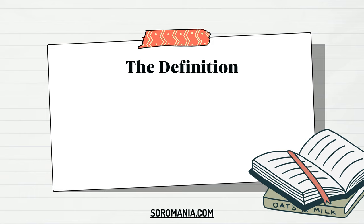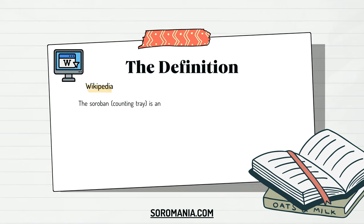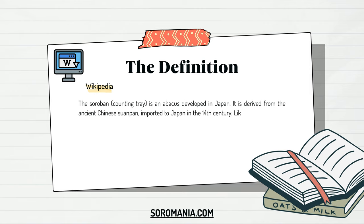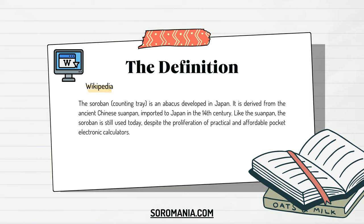The definition of Soroban, according to Wikipedia, is: the Soroban, or counting tray, is an abacus developed in Japan. It is derived from the ancient Chinese Suenpan, imported to Japan in the 14th century. Like the Suenpan, the Soroban is still used today, despite the proliferation of practical and affordable pocket electronic calculators.